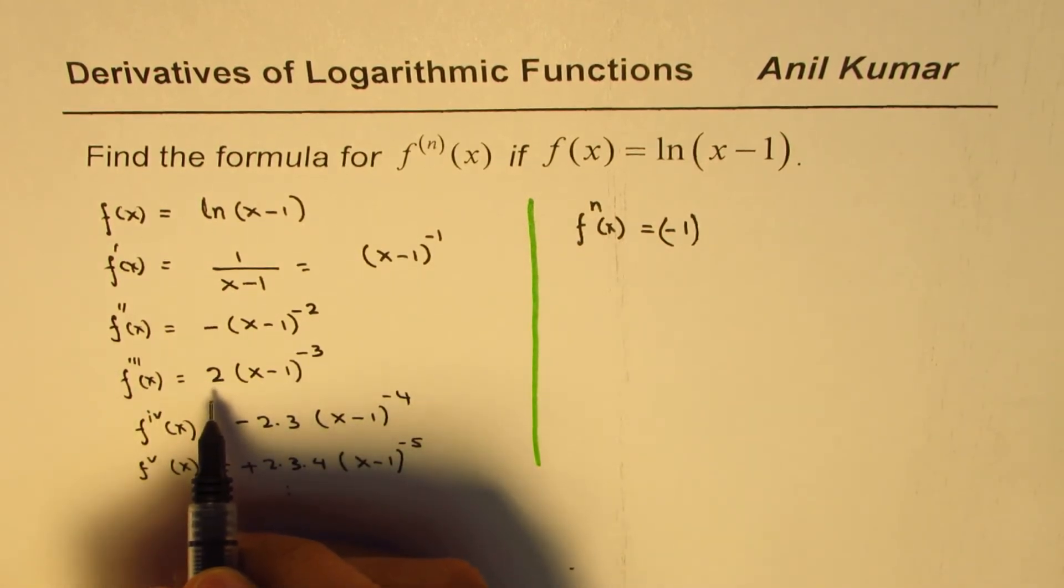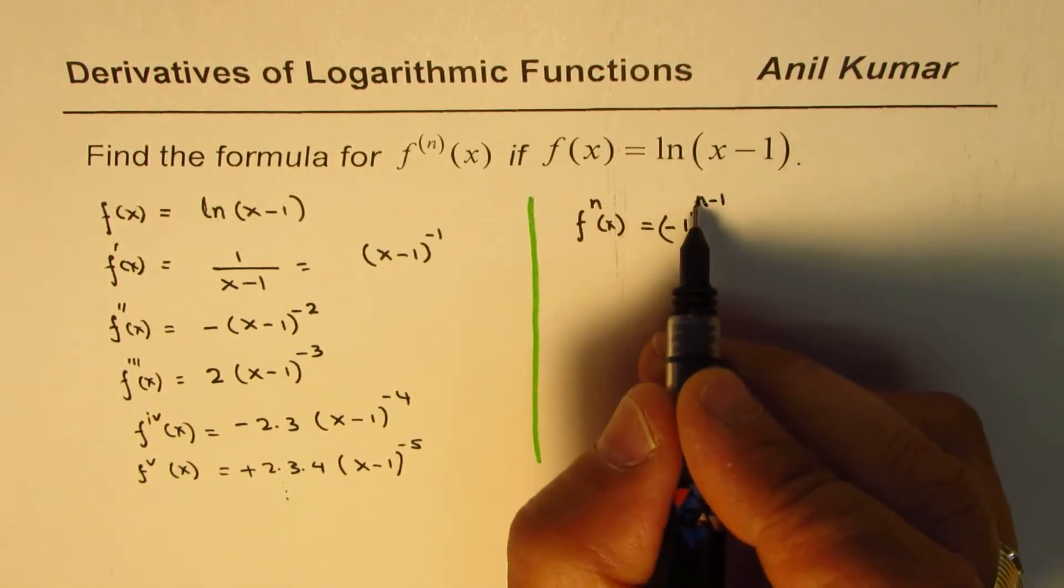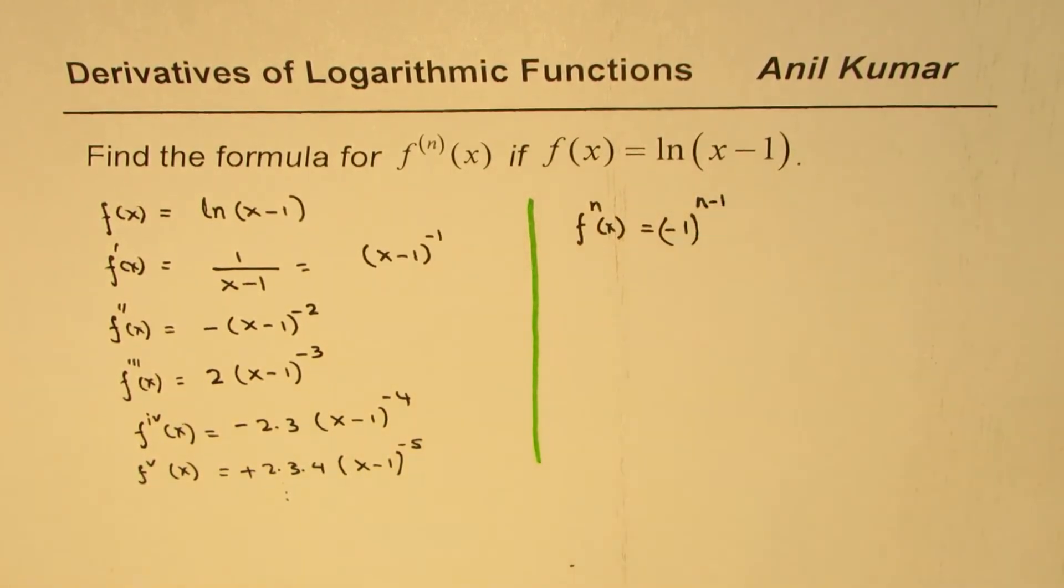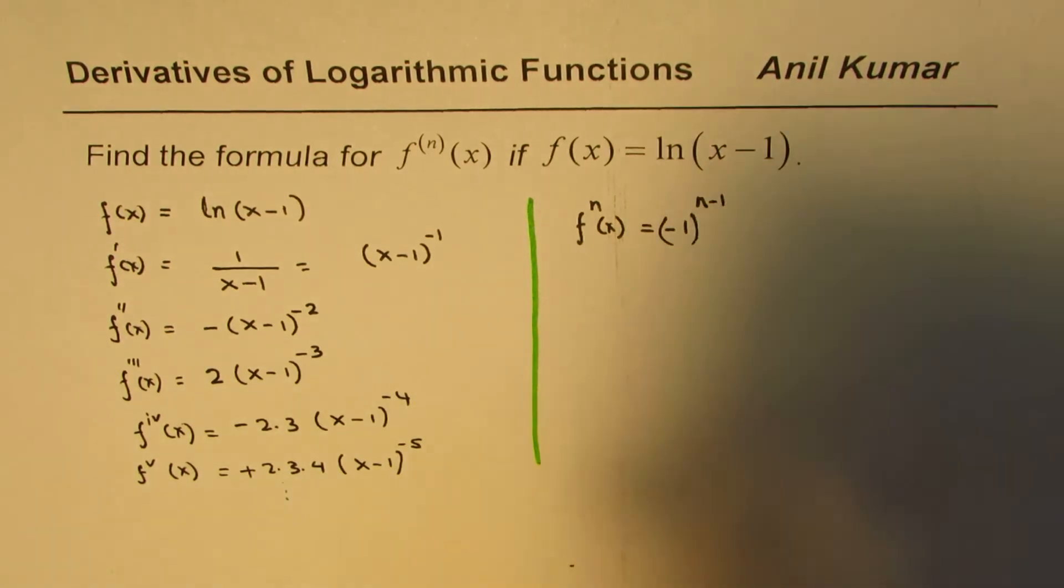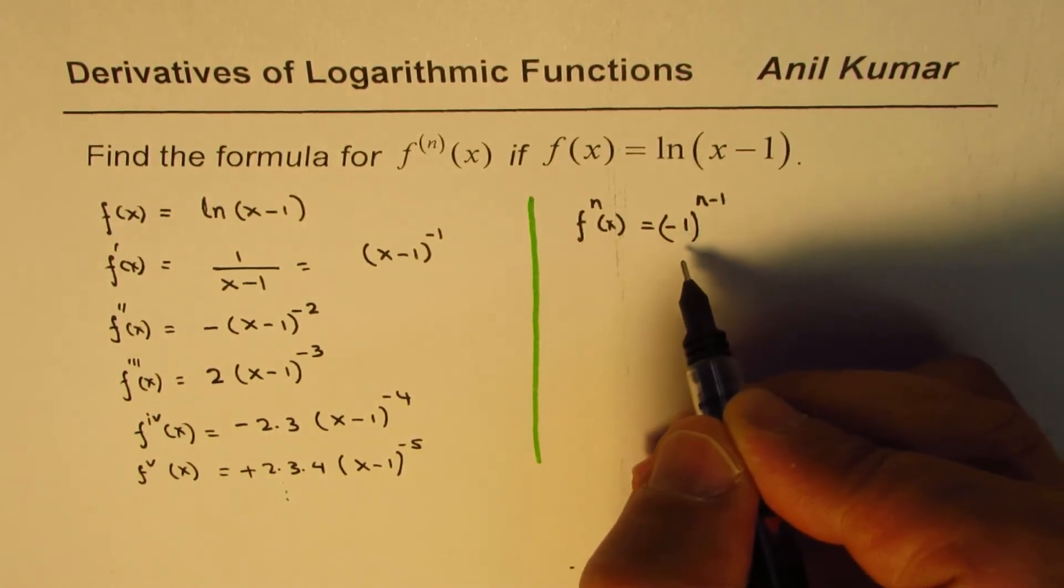So for the third derivative, it is positive. We could write this as n minus 1 here, so 3 minus 1 is 2, that makes it positive. But if I write 4 here, then 4 minus 1 will be an odd number, and we'll get negative. So that is kind of a check.